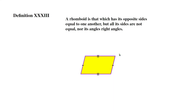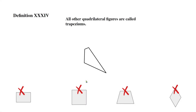Definition 33: a rhomboid is that which has its opposite sides equal to one another but all its sides are not equal nor its angles right angles. So a rhomboid is a figure that has opposite sides equal to each other but the angles are not right angles.